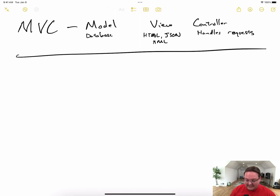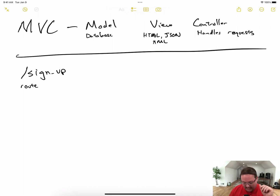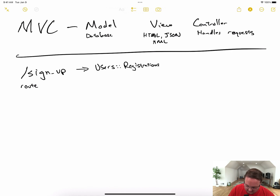The core of your Rails application will be MVC — models, views, and controllers. Let's talk about an example request. A user might come to the sign-up URL, which we would consider a route. A route is just a URL path the user types in. Inside the routes file in our Rails app, a route tells it which controller to send the request to — for example, the UsersRegistrations controller.